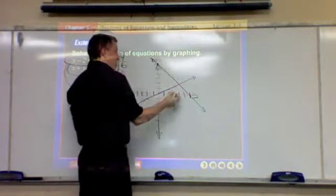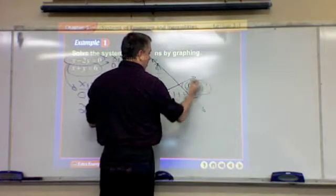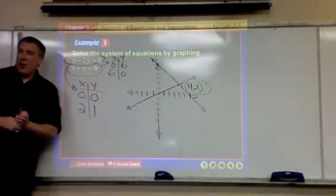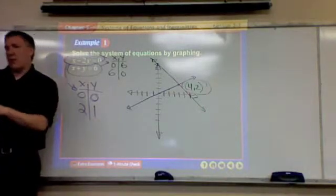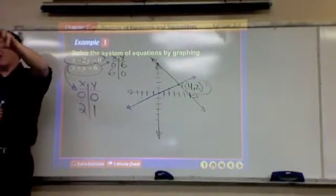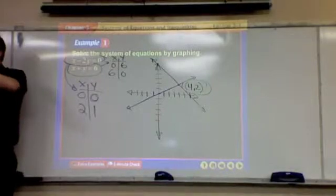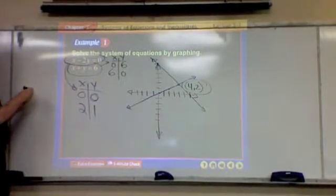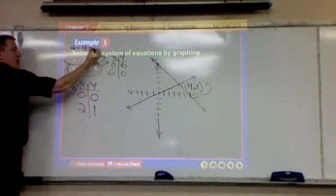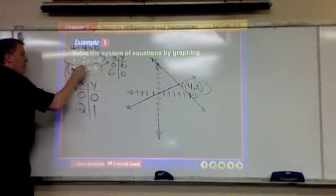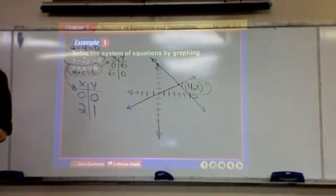All you're going to do in these problems is estimate where the lines cross. What looks closest? Four, two — the intersection looks like (4, 2). When we grade this first assignment, if you're close, we'll accept it because it's just by graphing. But if you want to check, plug those numbers back into both equations. Four minus two times two equals zero — yes, that works. And four plus two equals six — yes. So (4, 2) is the exact answer. That's solving by graphing.